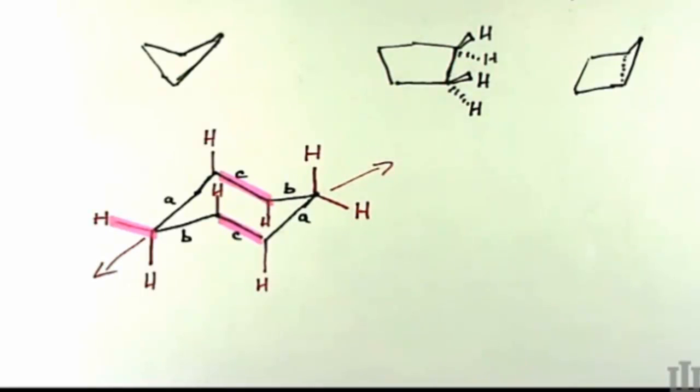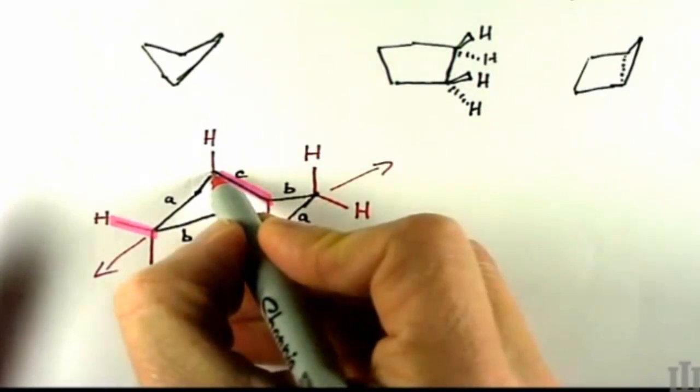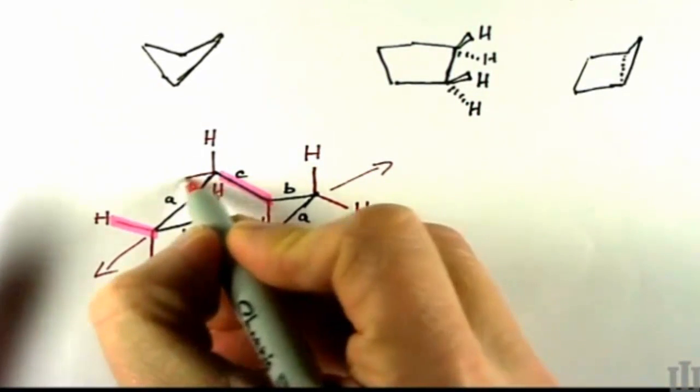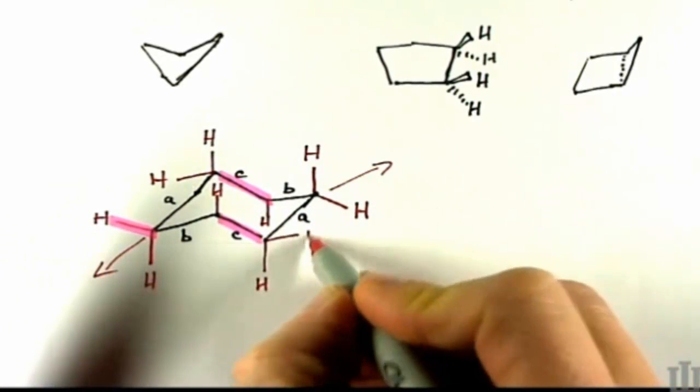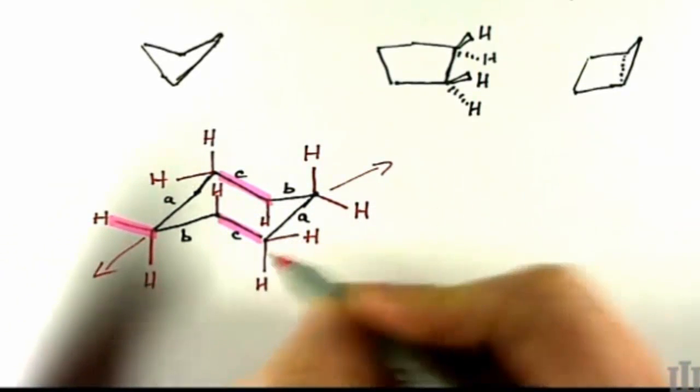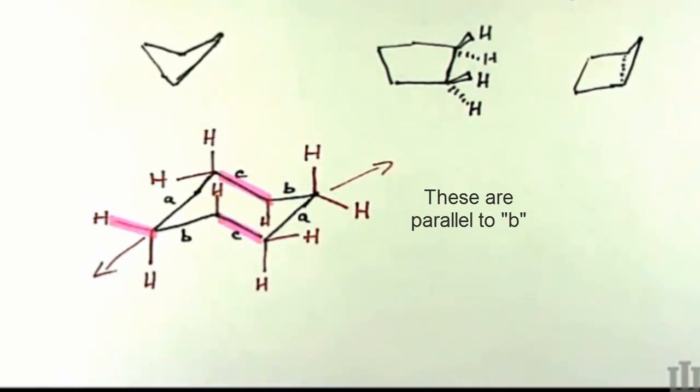Those two are the easier two. Actually, those two are pretty easy, and the ones between A and C are not too bad either. So we'll go ahead and put A's and C's, the hydrogens that are at the intersection of A and C, in. So they're pointing one up and one down.